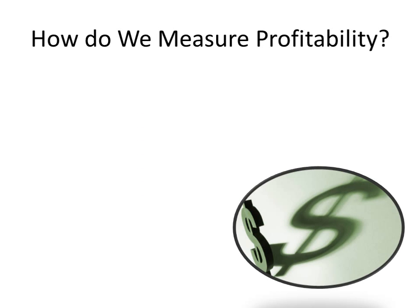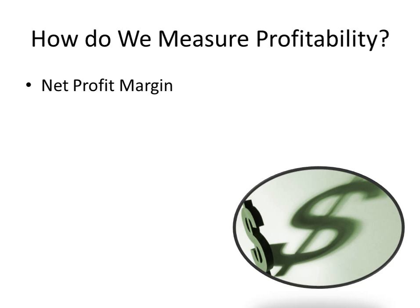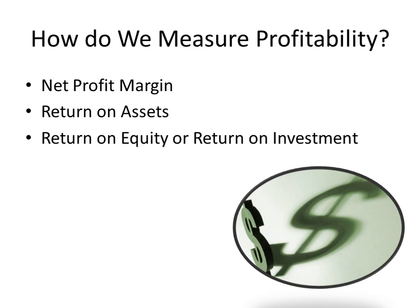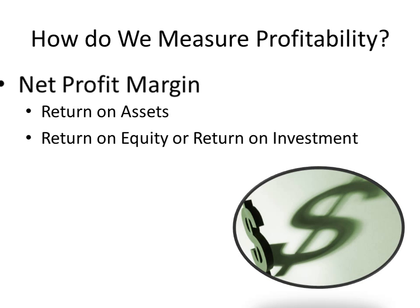There are several measures which we can use to measure a company's profitability. One such way is called net profit margin ratio. Another is return on assets, or ROA as it's often referred to. Return on equity or ROE and return on investment ROI are other measures that we could use as well. In this particular module we'll be learning about the net profit margin ratio.